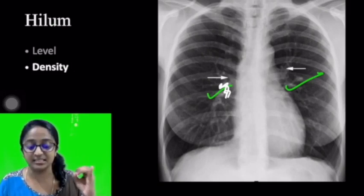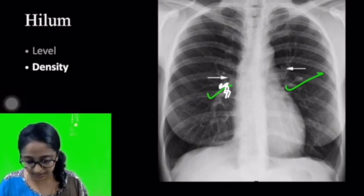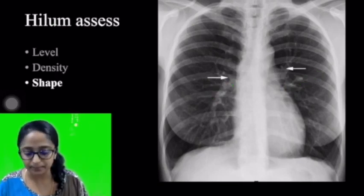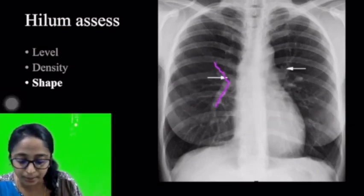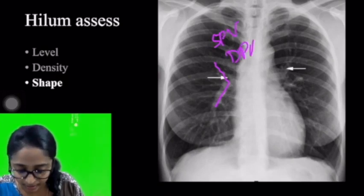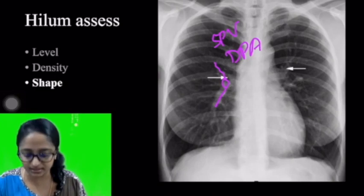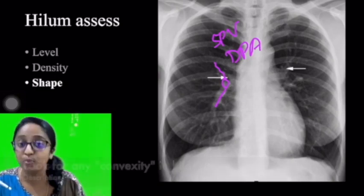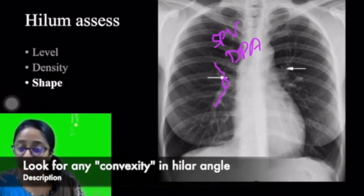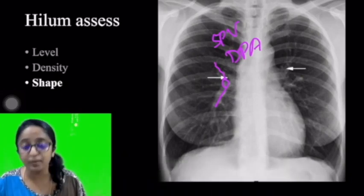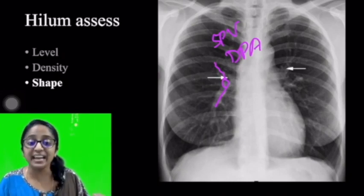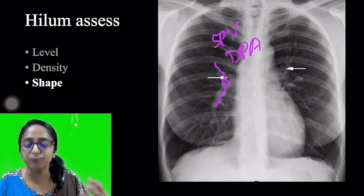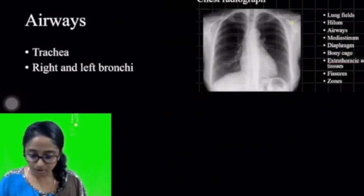Coming to the third aspect — the shape. Remember, the hilar angle is an acute angle formed between the superior pulmonary vein and the descending pulmonary artery, and this angle is concave. Any convexity should ring a bell — it could be pathological. Any convexity may be due to an abnormality in the vessels in the hilum, maybe an aneurysm, a dilated vessel, or an added structure such as lymphadenopathy. All of this will impart a convex shape to the hilum. So we have finished the lung fields and the hilum.